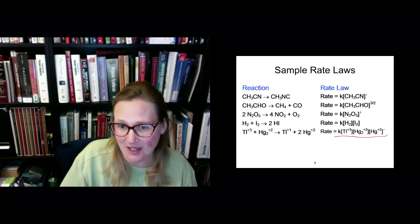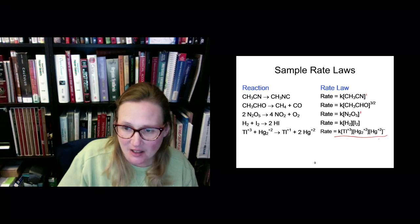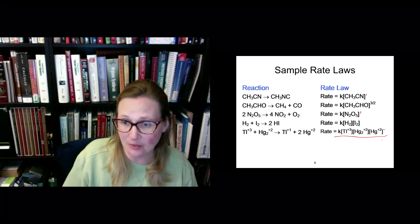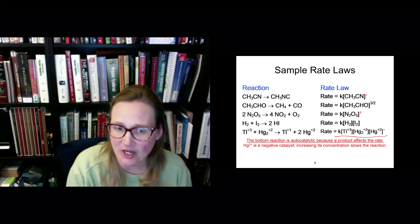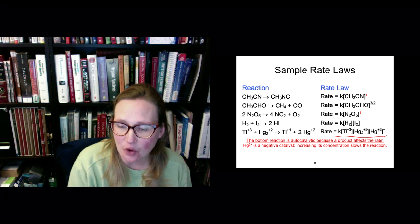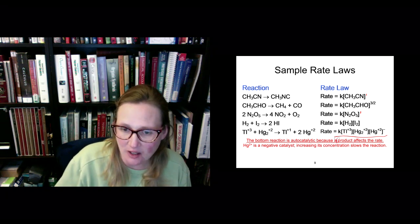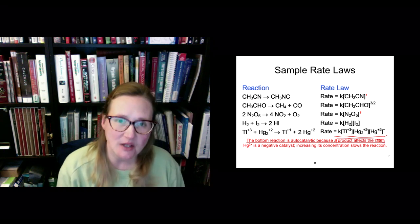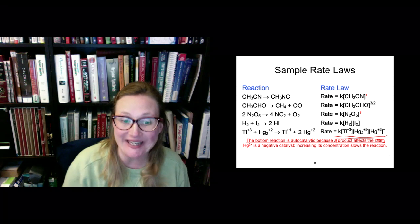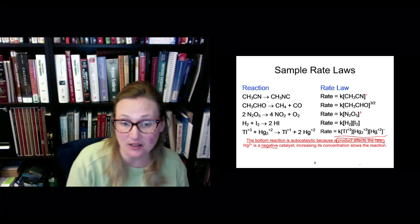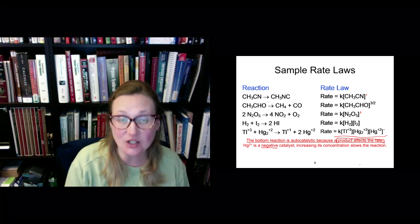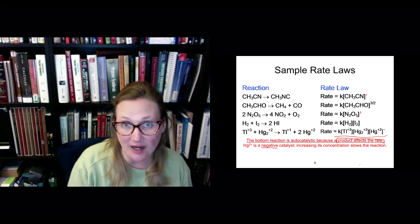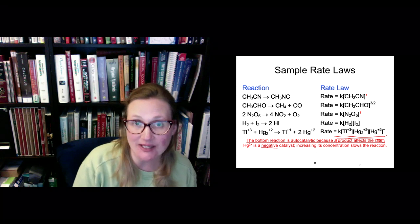Let's look at the last reaction. Here we have first order with respect to the thallium, first order with respect to the dimercury, but then we have Hg2+ to the negative 1. What does that mean? This bottom reaction is what's called autocatalytic because the product affects the rate. The product affects the rate of reaction, and in this case that mercury 2+ is called a negative catalyst. If I increase the concentration of that product, it is slowing down the overall reaction — so it's a negative 1, a negative catalyst, slowing down the reaction.